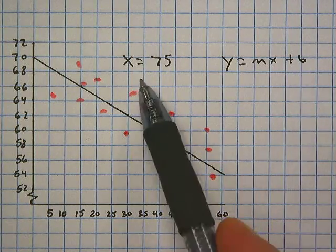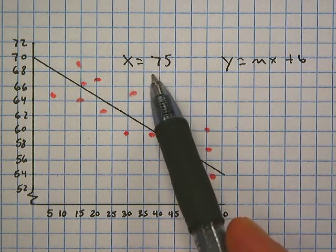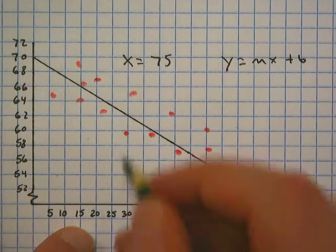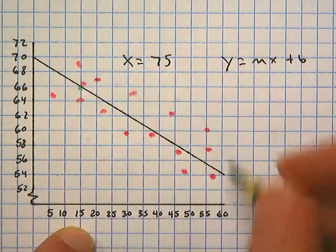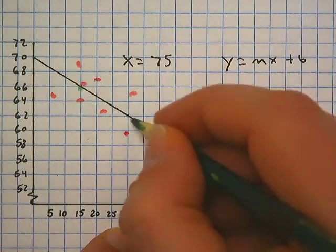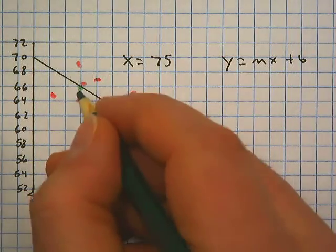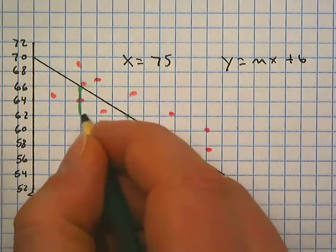We're going to follow the same steps. Y equals mx plus b and we want to know what y is when x is equal to 75. First thing we need to do is find the slope. So we can see that at x equals 15 and x equals 30, they both go through that juncture point on the line.